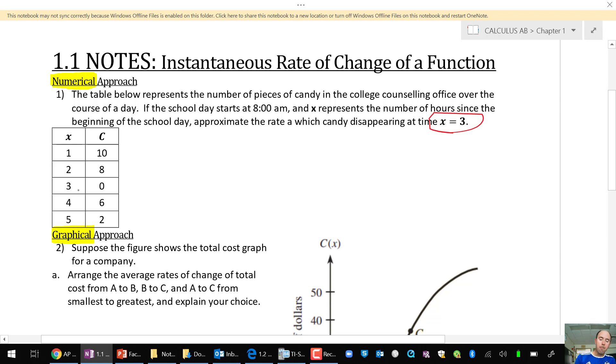Now, what we're going to do is bound x equals 3 on the data table. We'll use the symmetric difference quotient. By that, I just mean we're going to go around the number 3 using 2 and using 4. So how does that look in the difference quotient? Well, c of 4 minus c of 2 divided by 4 minus 2 is the average rate of change difference quotient.